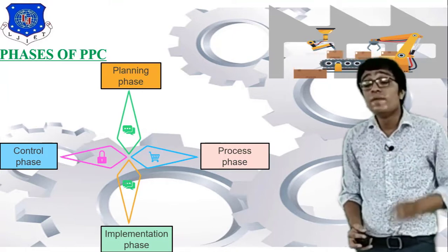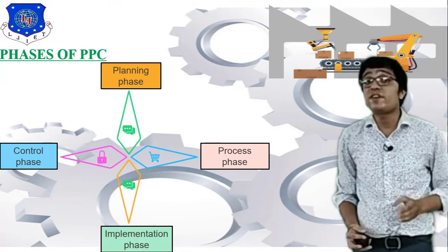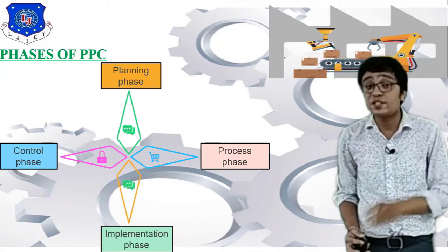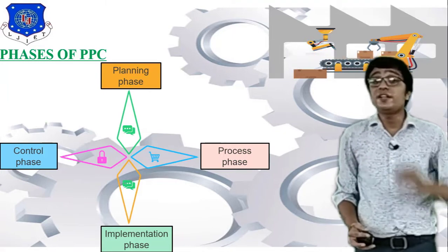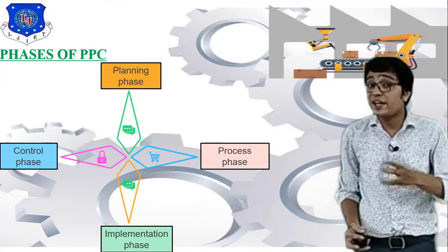So to summarize: the four phases of Production Planning and Control are the planning phase (operation and sequence planning, plant layout), the process phase (operation sequences), the implementation phase, and the control phase.